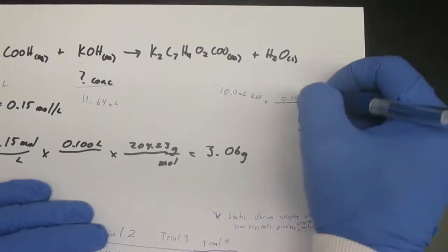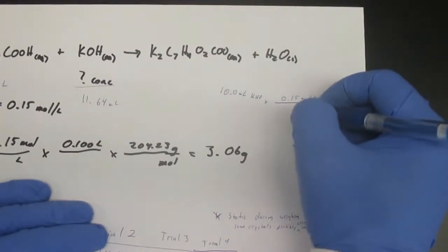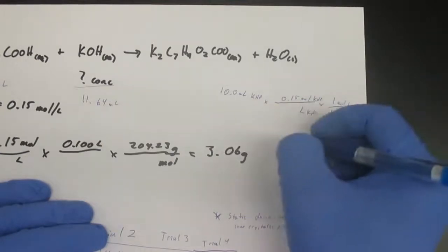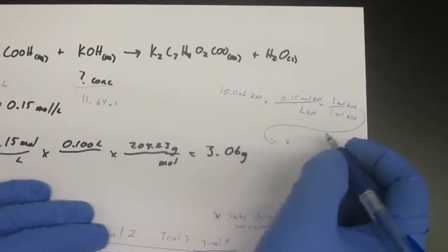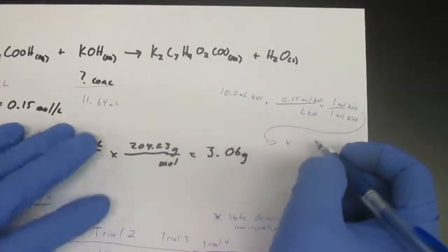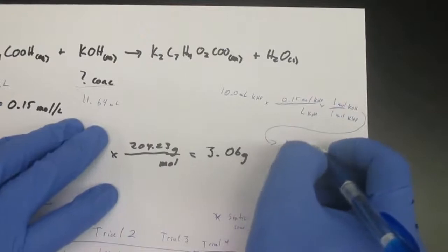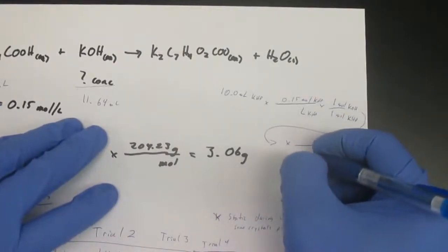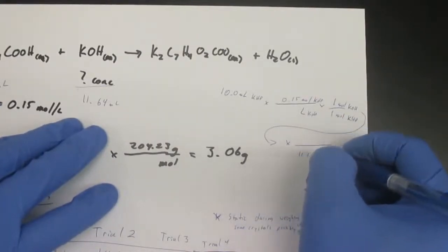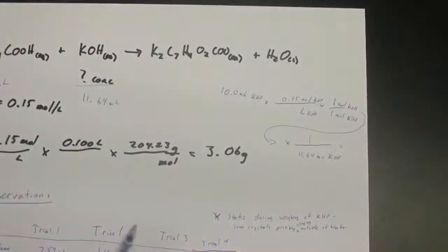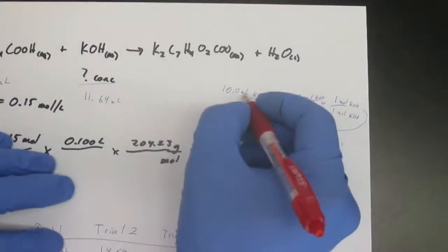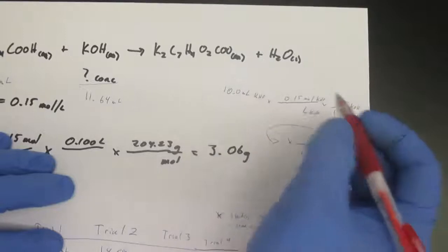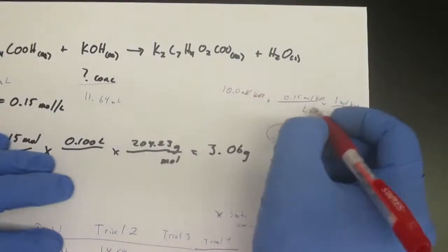So this has been KHP, KHP. Continuing my equation on the next line here, we can now divide it by the milliliters of KOH—11.64 milliliters of KOH—and find that answer.